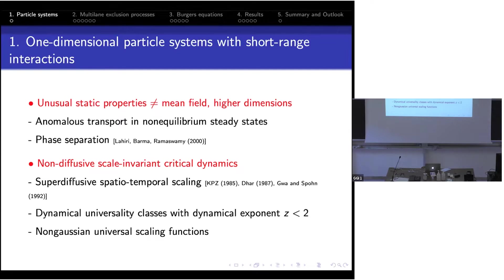There are also dynamical phenomena which are unusual. For instance, you get not only diffusion in a random process, but particularly you get super-diffusive spatial-thermal scaling. We have known this for a long time from the KPZ equation, and seminal work in this direction is also very old, by Deepak Dhar and Herbert Spohn. One finds a dynamical universality class with dynamic exponent less than two, meaning super-diffusive, and the scaling function will not be Gaussian as in normal diffusion, but something non-Gaussian.